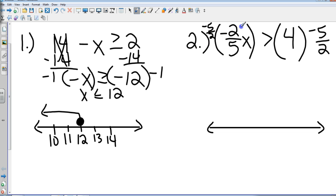Okay. 2s cancel, 5s cancel, negatives cancel. That gives me x. And what did I multiply both sides by? A negative. So what do I have to do with that sign? Flip it again. How do I take negative 5 over 2 times 4? 4 over 1. And what can the 2 and the 4 do? Simplify.